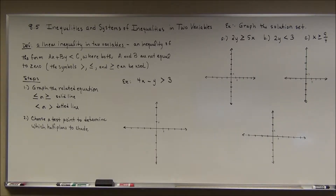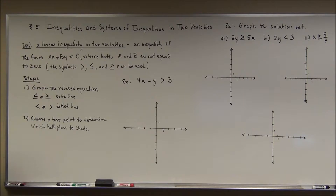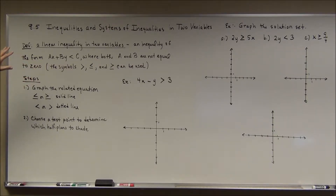We've done inequalities in single variables where we'd have like x is greater than 5 and we'd graph on the number line. With two variables, we need two number lines. I have all sorts of sets of coordinate axes already set up for graphing our solutions, because linear inequalities don't have single answers — just like inequalities in one variable, they have typically infinitely many answers. The best way to represent that is with a graph.